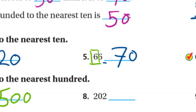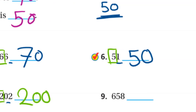Here the hundreds digit is 2, so it will be 200 or 300. We look at the digit to the right, which is 0. Zero is a weak digit, so it stays at 200, not 300. Next, for 658: the hundreds digit is 6, so it will be 600 or 700. The digit to the right is 5, which is a strong digit.